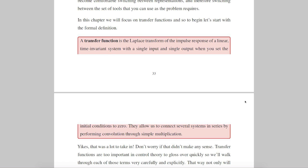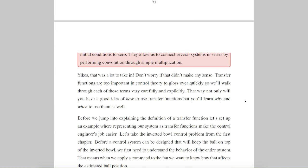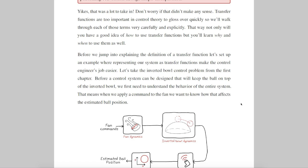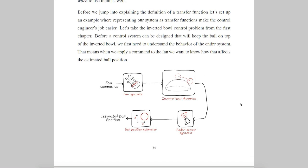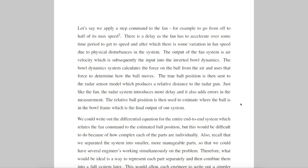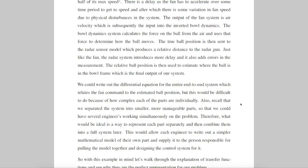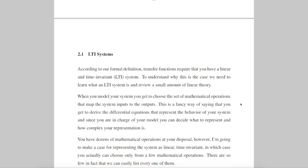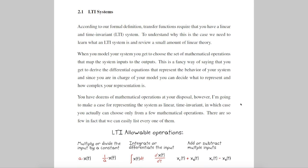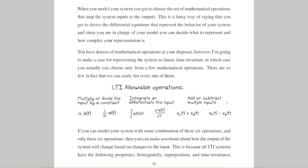They allow us to connect several systems in series by performing convolution through simple multiplication. I made that definition difficult to follow on purpose, mostly because other books have equally confusing statements, but also because it gives me an opportunity to walk through each part explicitly so that you understand this definition by the end of the chapter. We start by describing a linear time-invariant system. Even though you have dozens of mathematical operations to choose from, if you want to model your system as LTI, then you really only have these six.